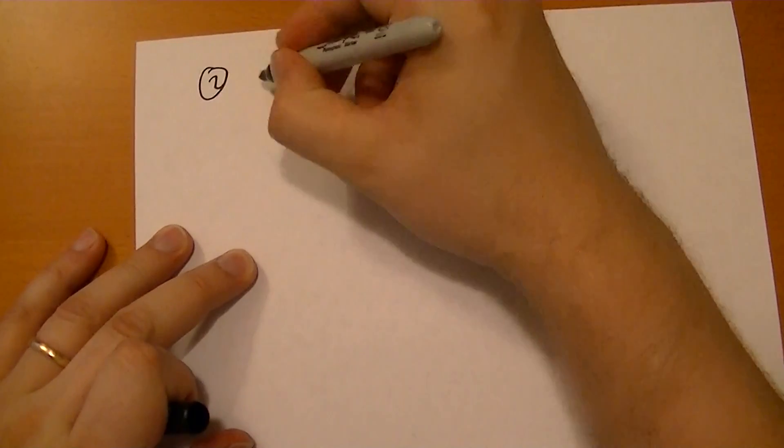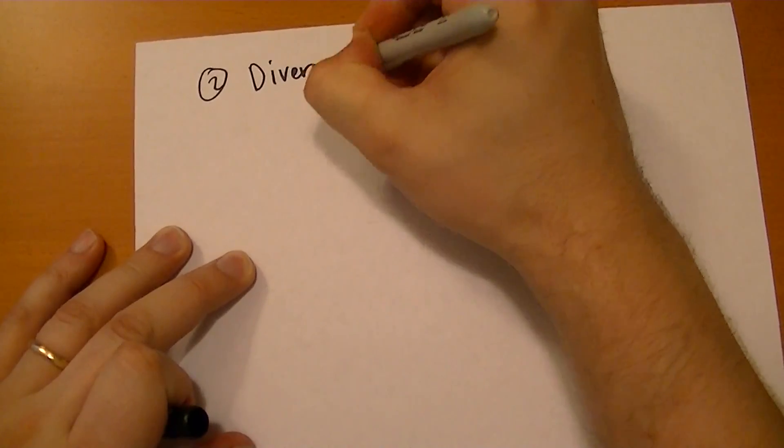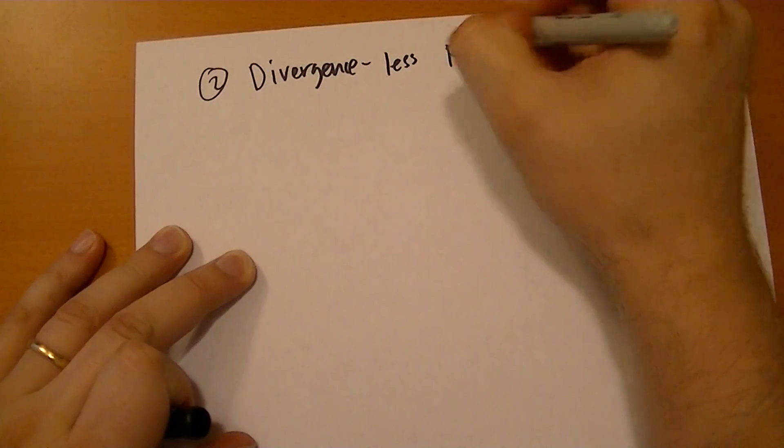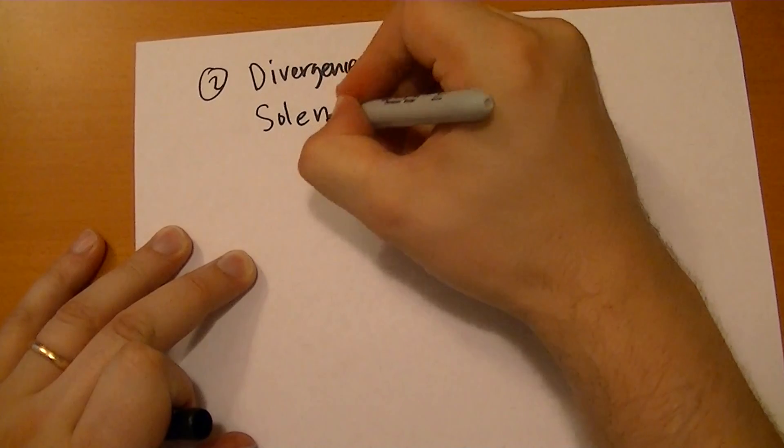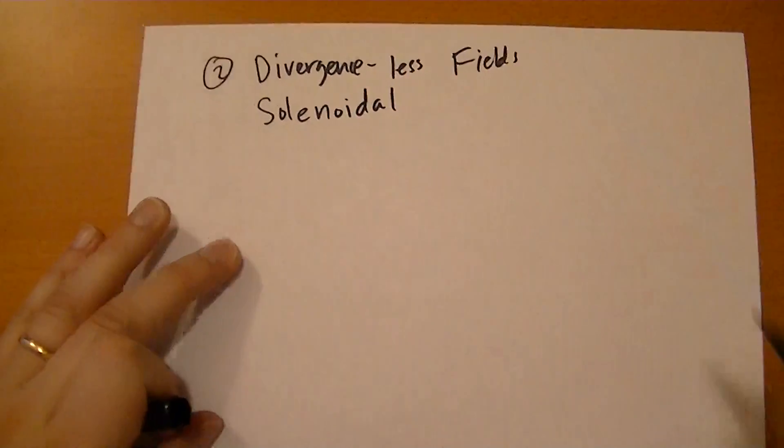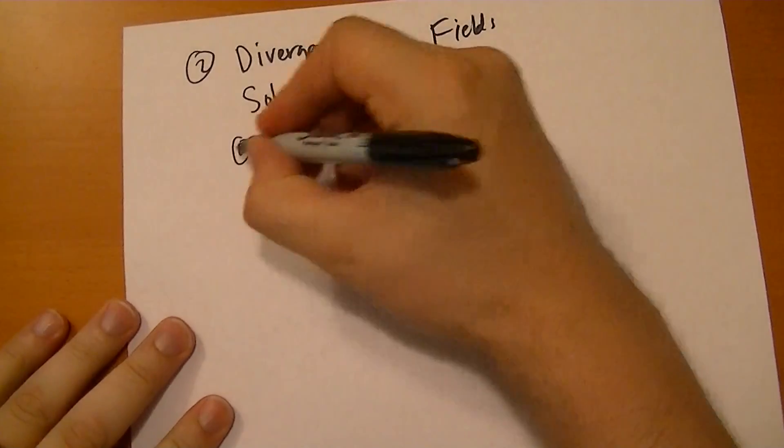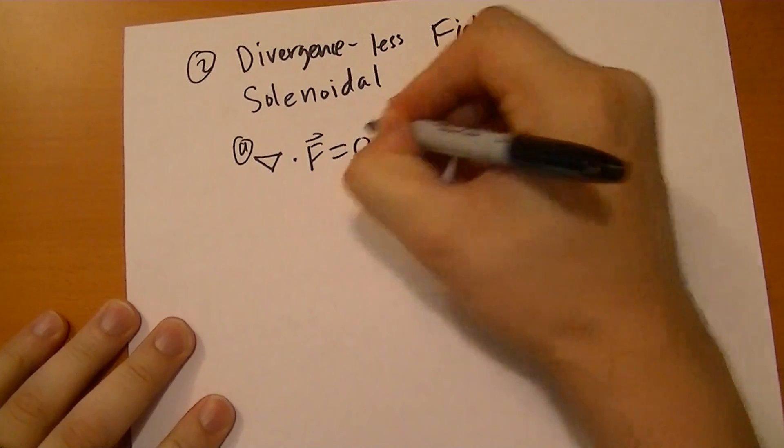So number two is the divergence-less, we call them solenoidal. And again, if any of these statements is true, then all of them are true. So one is that div of F is equal to zero.